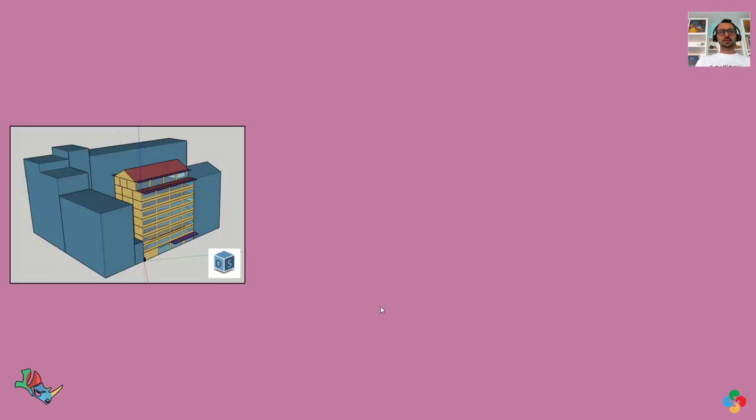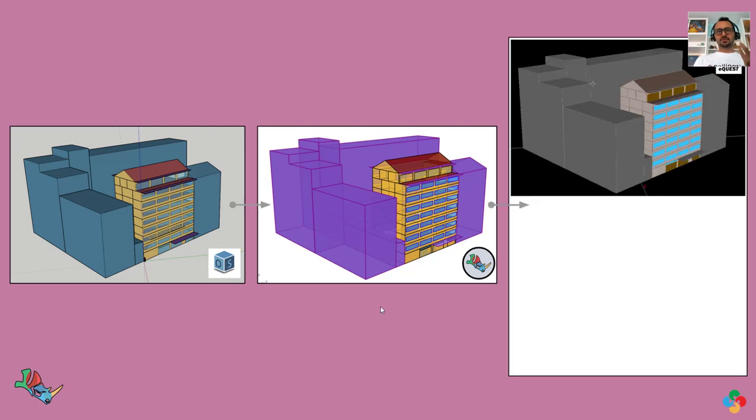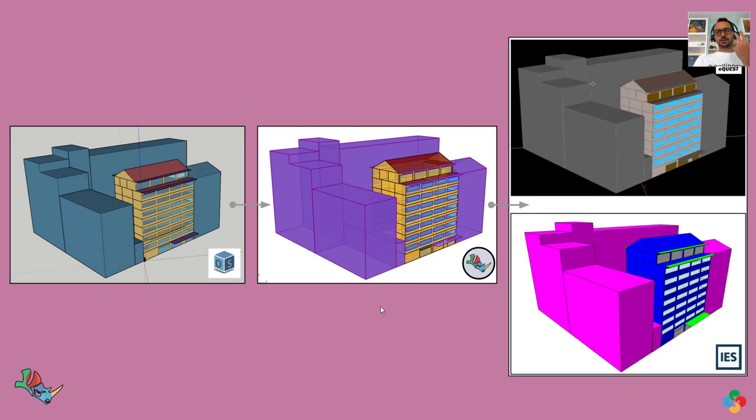And then you have this kind of workflows that was not possible before. So, if you have an OpenStudio model, for example, you can use pollination Rhino to clean it up, validate it, and then export it to eQuest or ISVE.